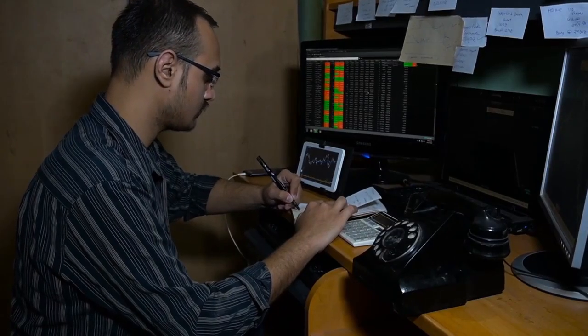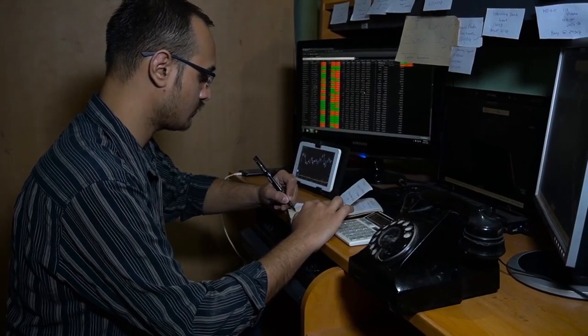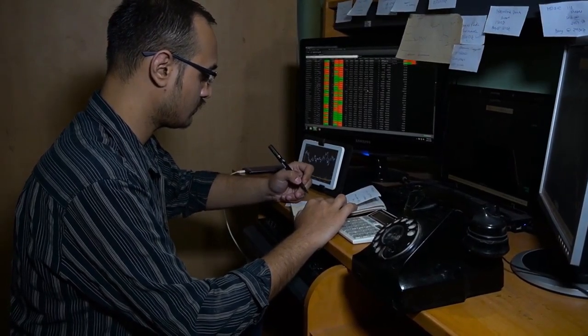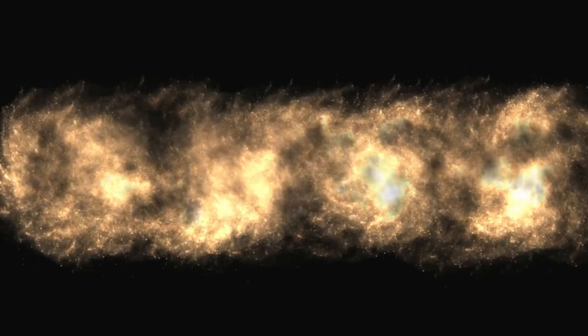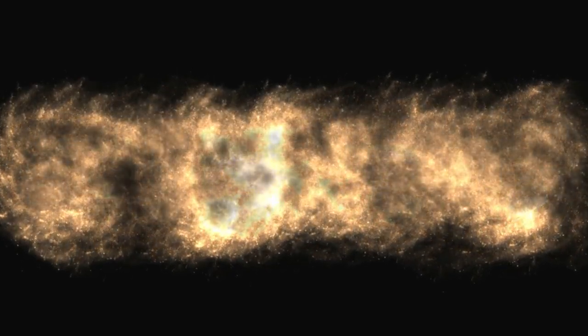Instead, staring back from the darkness was something that should not have been there: a galaxy, fully formed. Not a blur or a hazy blob, but a complex rotating system of stars, complete with spiral arms and even a monstrous black hole at its heart. Not just present, thriving, and it wasn't a one-off.